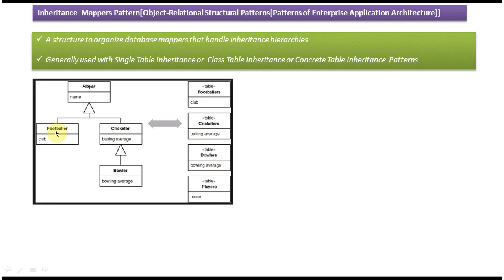Suppose a user wants to save footballer information in the corresponding tables — the user has to store player information in the Players table and footballer information in the Footballers table.